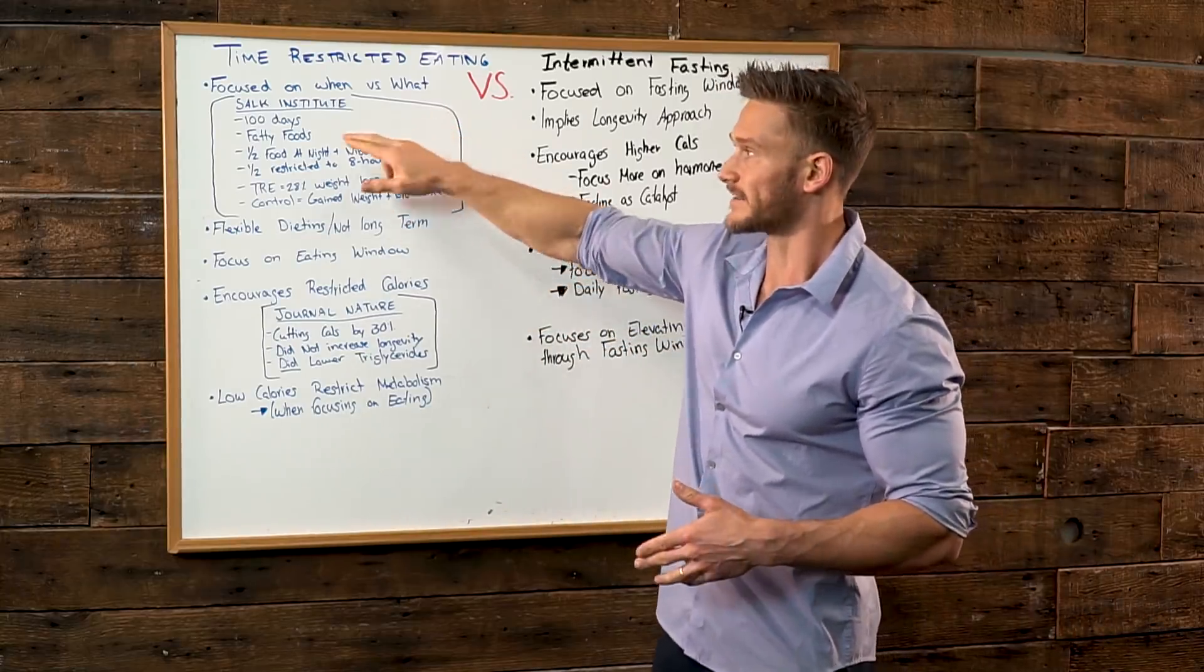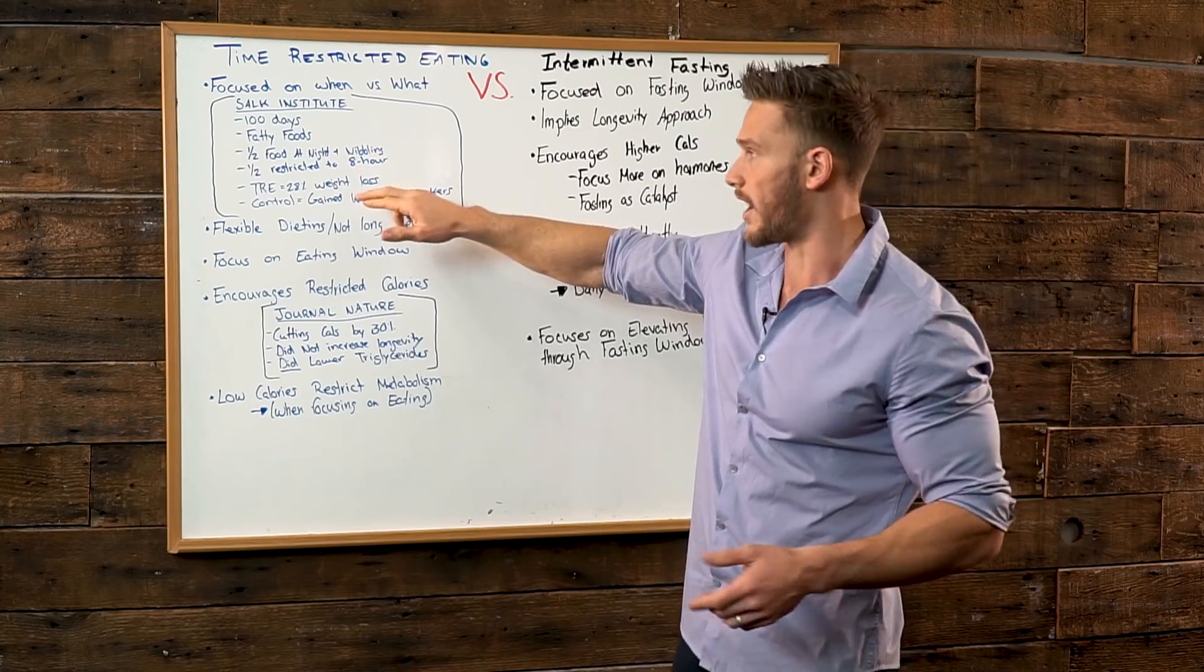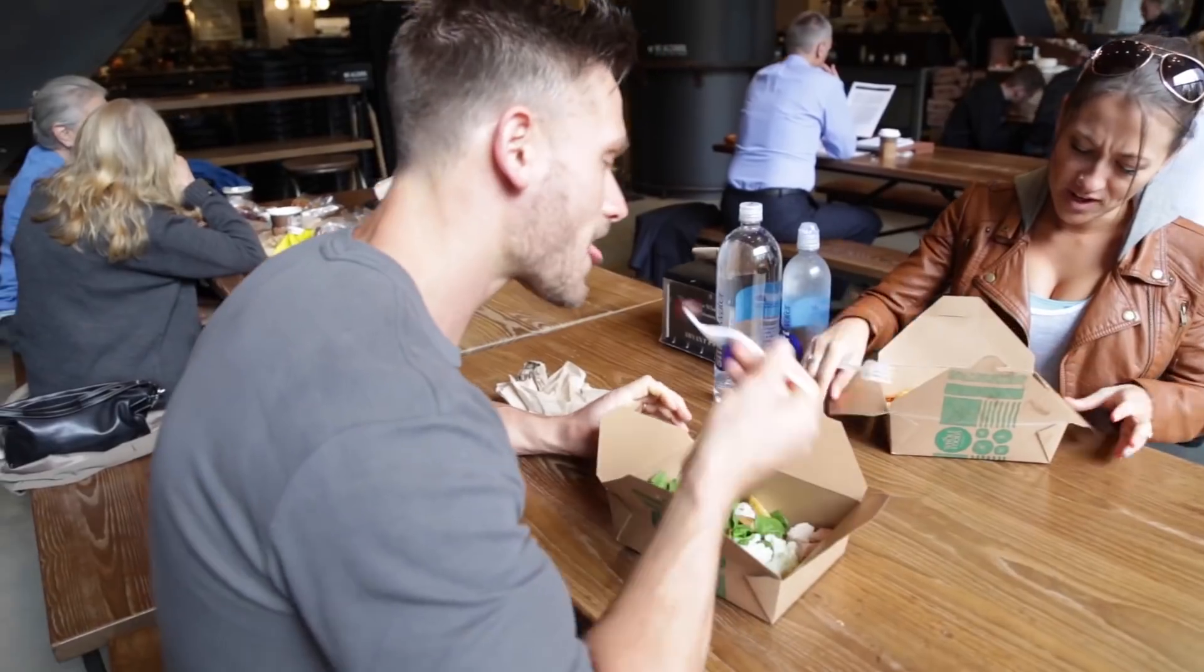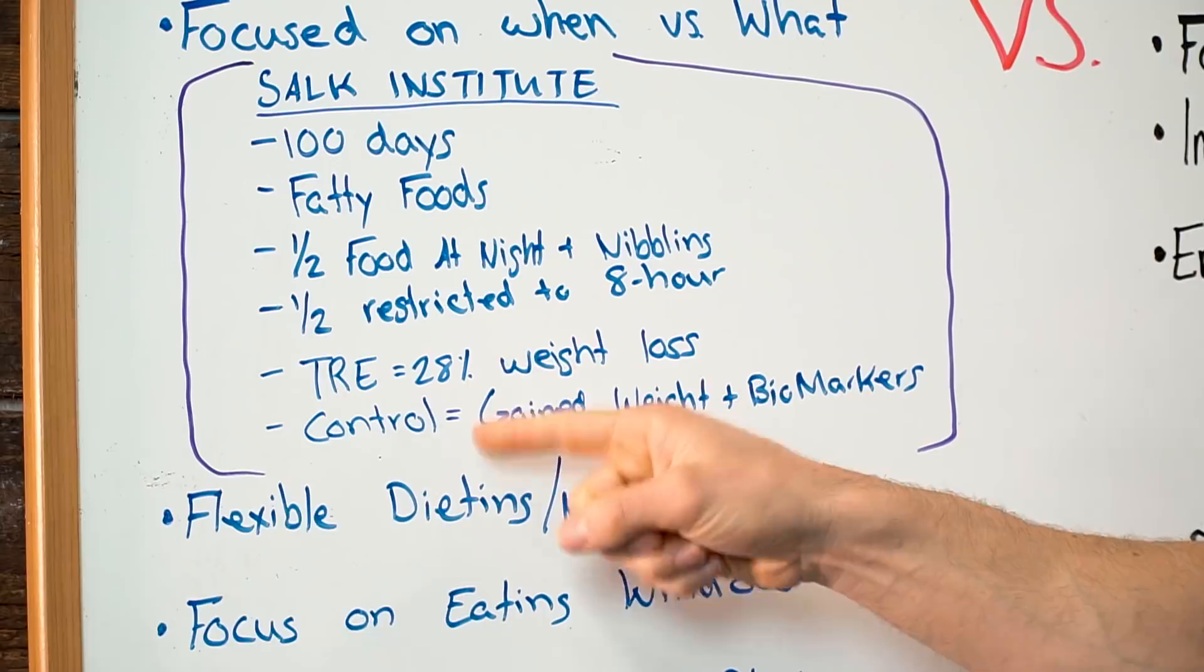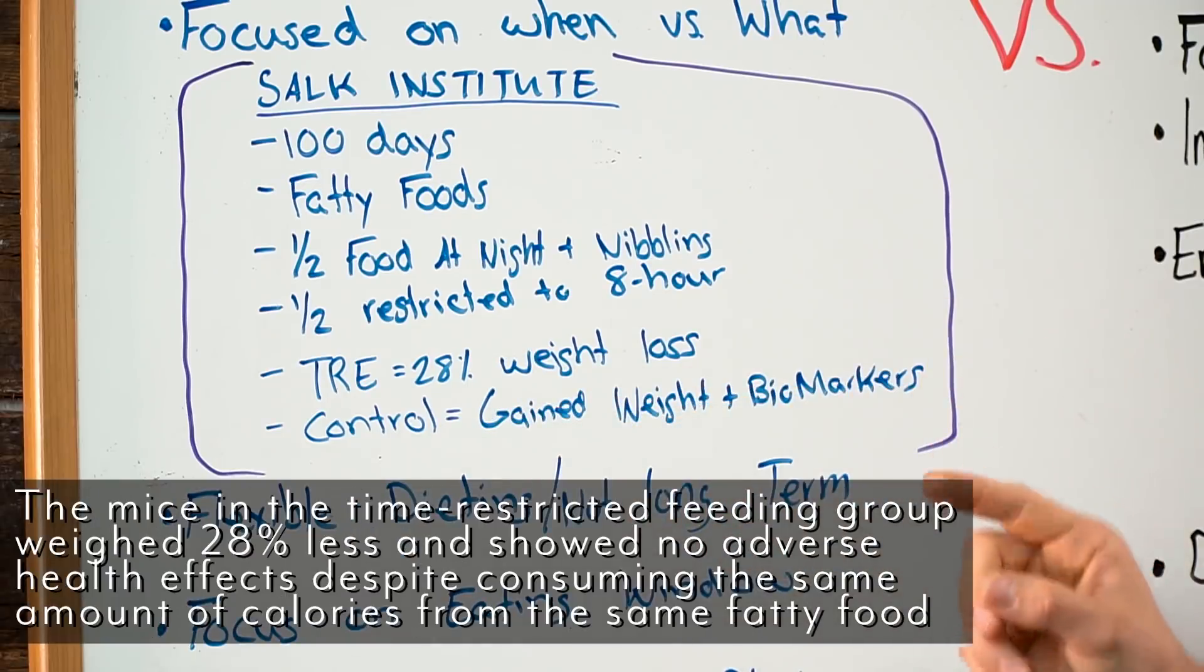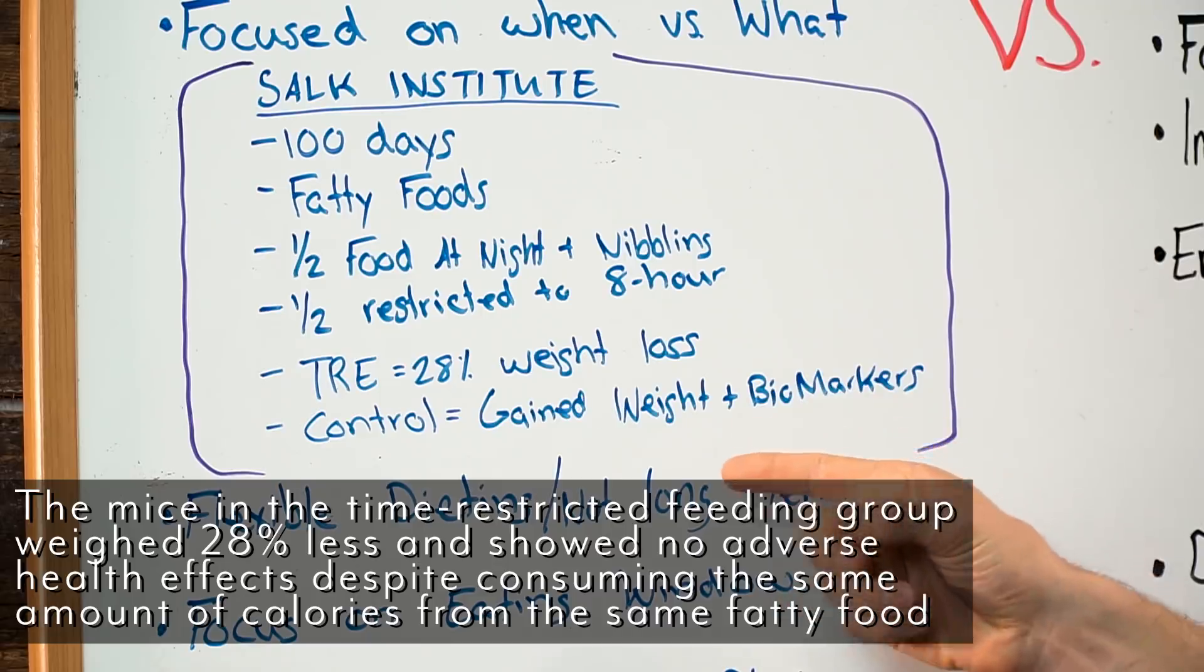But again, the focus being on the fact that they were eating kind of whatever they want, not really paying attention to the food that's going in their body like I like to do with intermittent fasting. Well, what they found is that the time-restrictive eating group ended up having 28% more weight loss than the other group. That's a pretty significant amount.